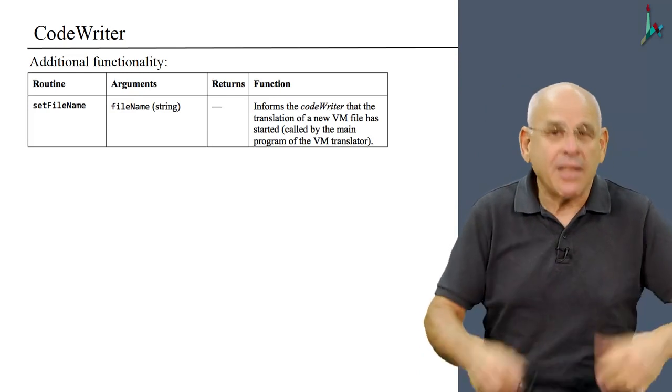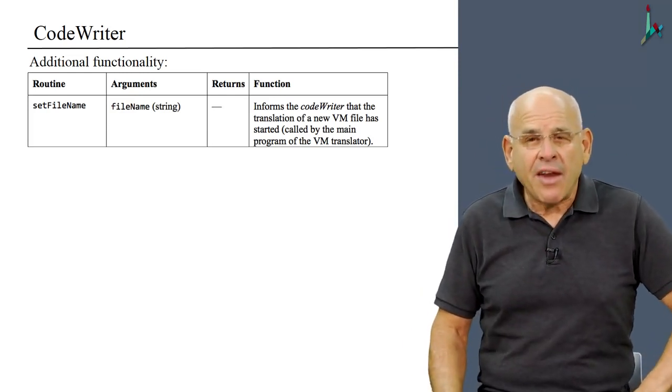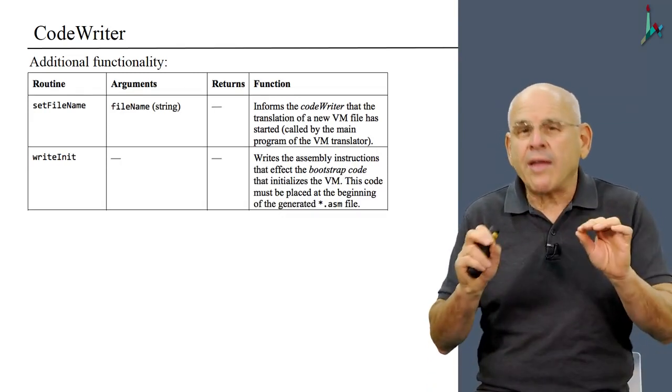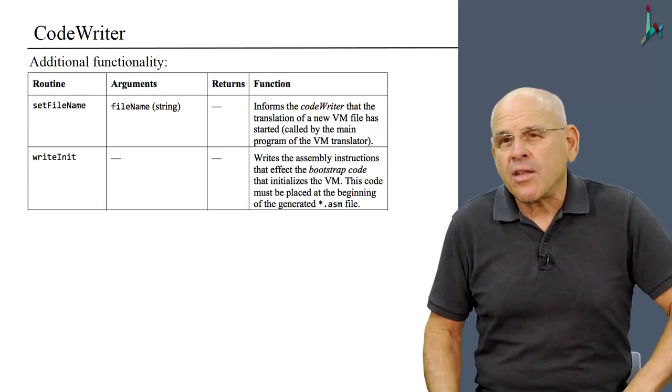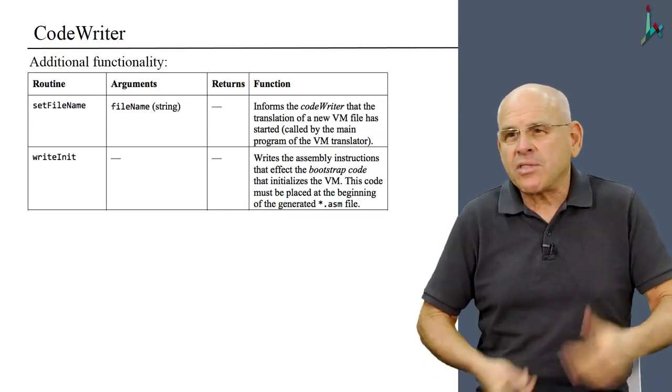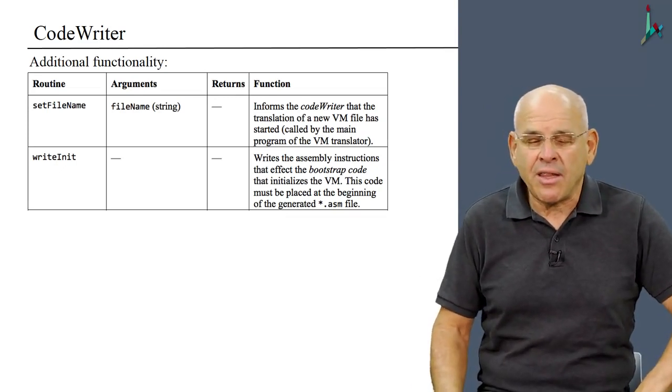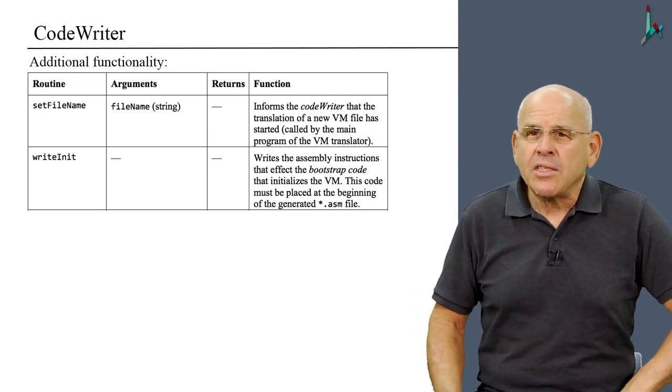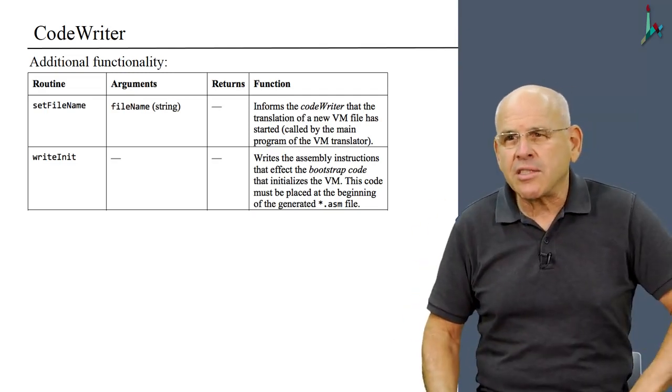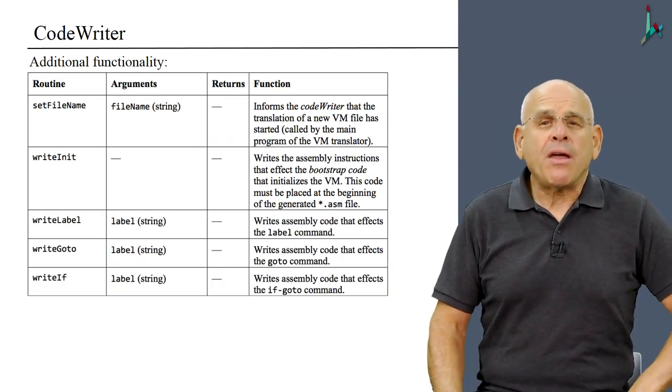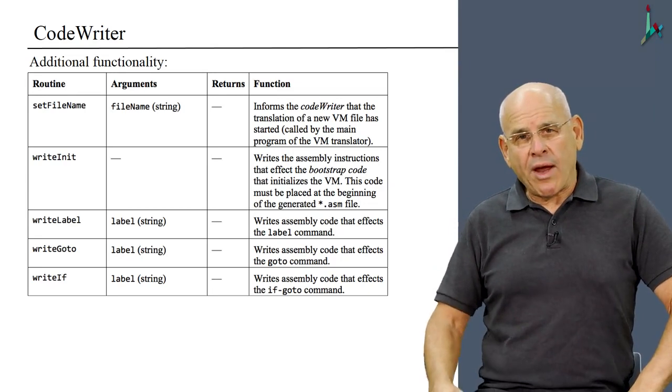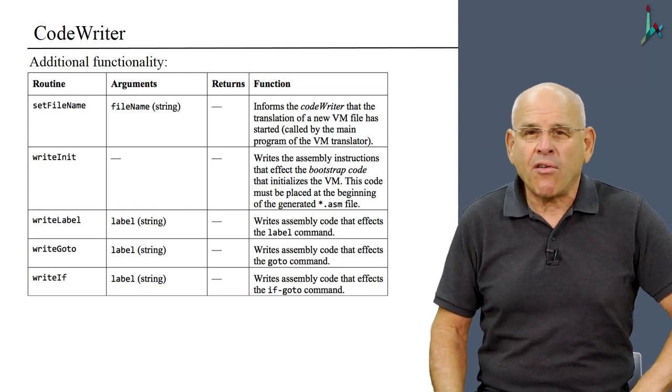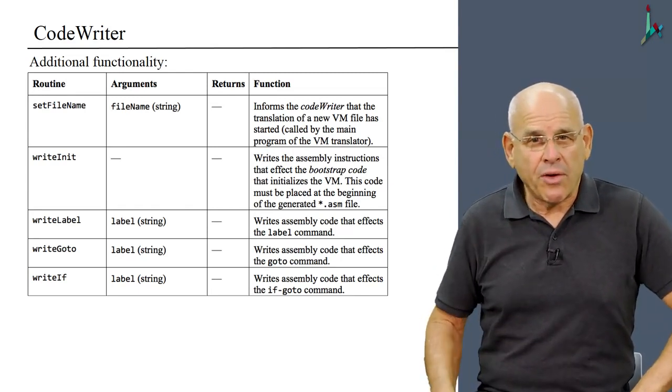And we are going to pass the name of this file as an argument. Then we are going to have another method whose job is to write the booting code that will enable the VM to start working as specified in the standard mapping of the VM on the hack platform. So writeInit is responsible for writing this code. And then there will be three methods called writeLabel, writeGoto, and writeIf, which produce the assembly code which takes care of the commands label, go to, and if.